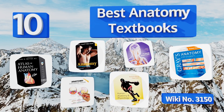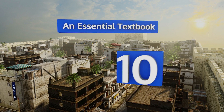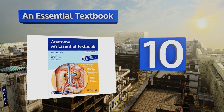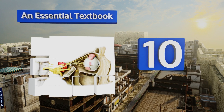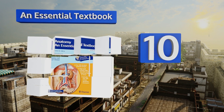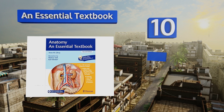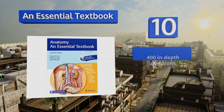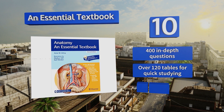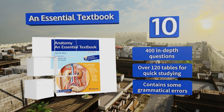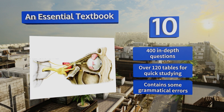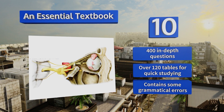Starting off our list at number 10, Ann M. Gilroy's anatomy textbook is an illustrated review that uses an easy-to-manage bullet point style, yet is packed with everything you'll need to gain a solid grounding in the subject. It features more than 650 images plus complimentary online resources, and includes 400 in-depth questions and over 120 tables for quick studying.